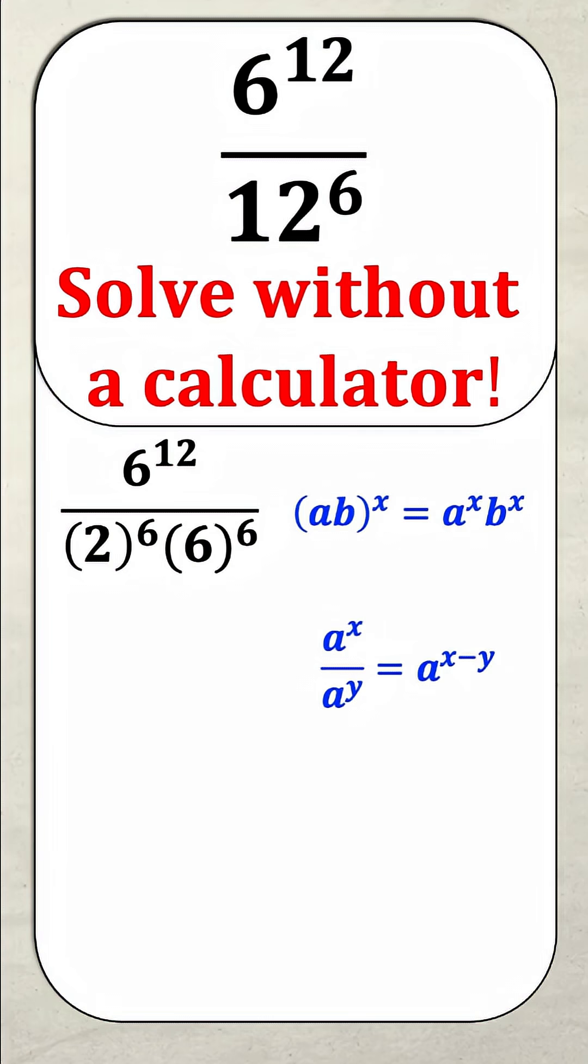Now remember, if I'm dividing something that has the same base, I just need to subtract the exponents. So this is going to be 6 to the power of 12 divided by 6 to the power of 6, which is going to be 6 to the power of 12 minus 6. And that's going to leave me with six sixes on the top. And so I've now simplified to 6 to the power of 6 divided by 2 to the power of 6.